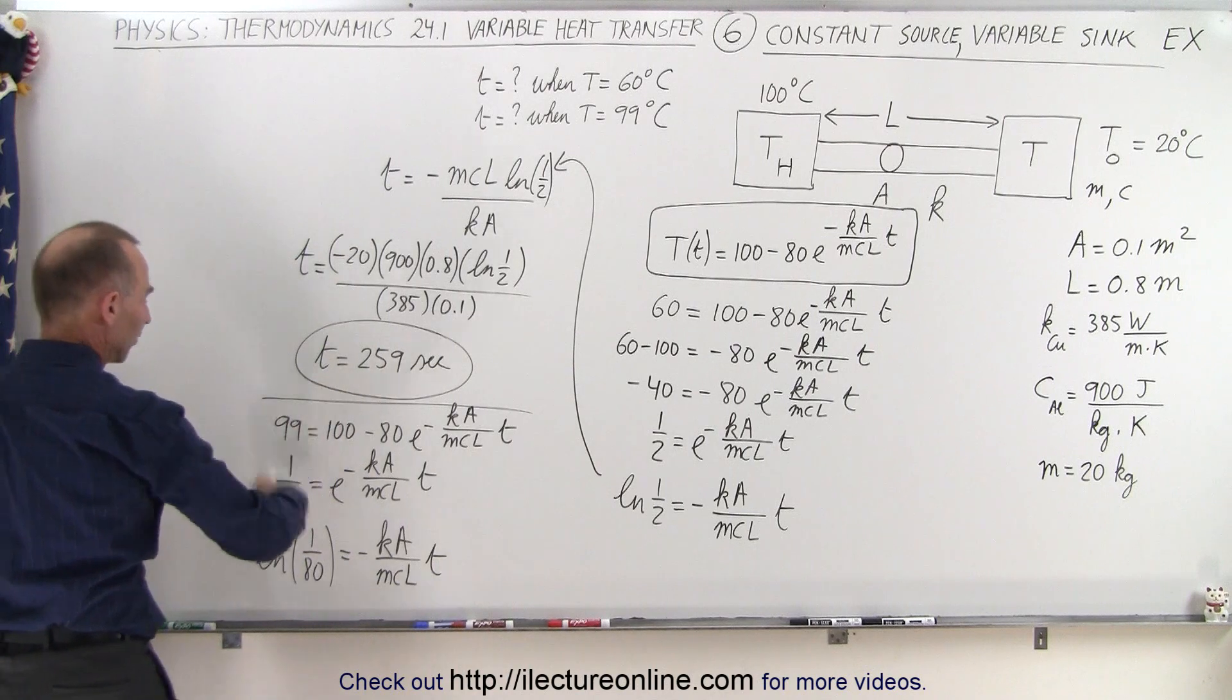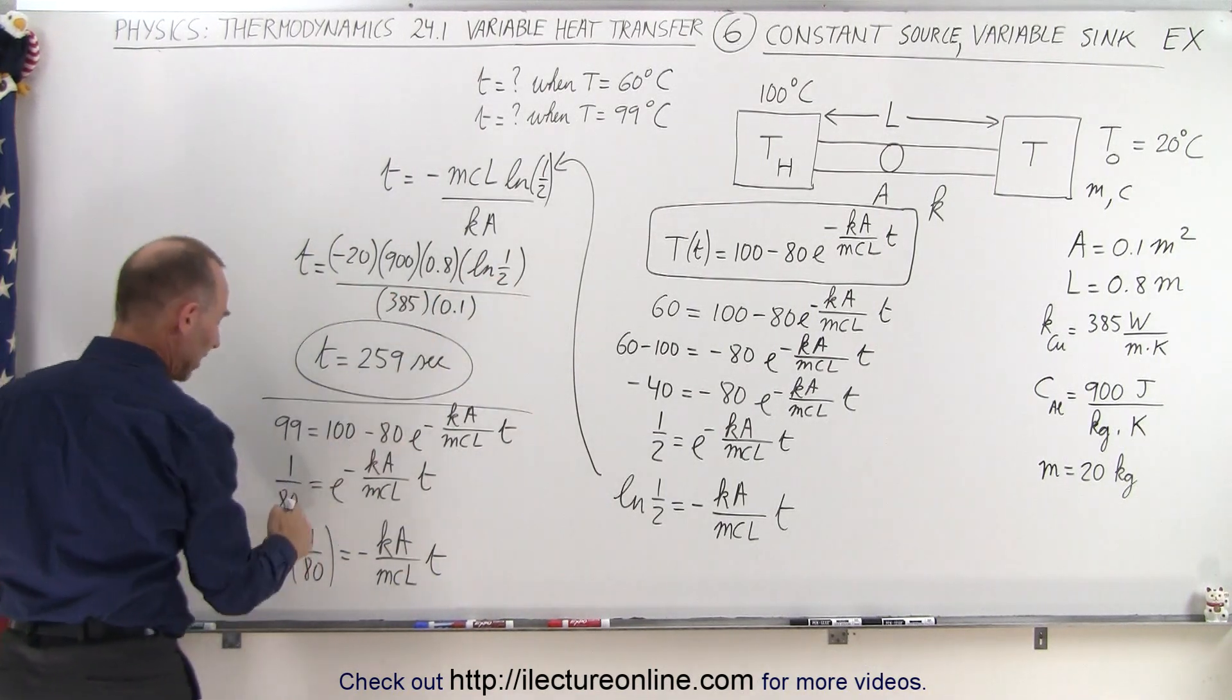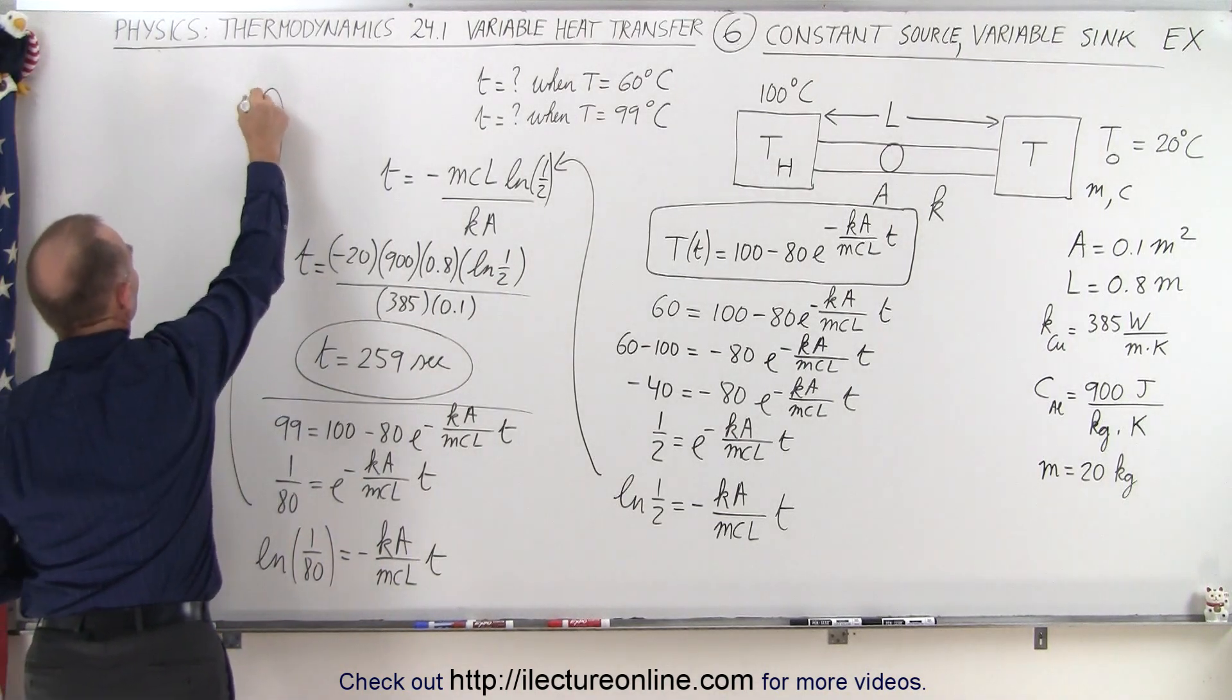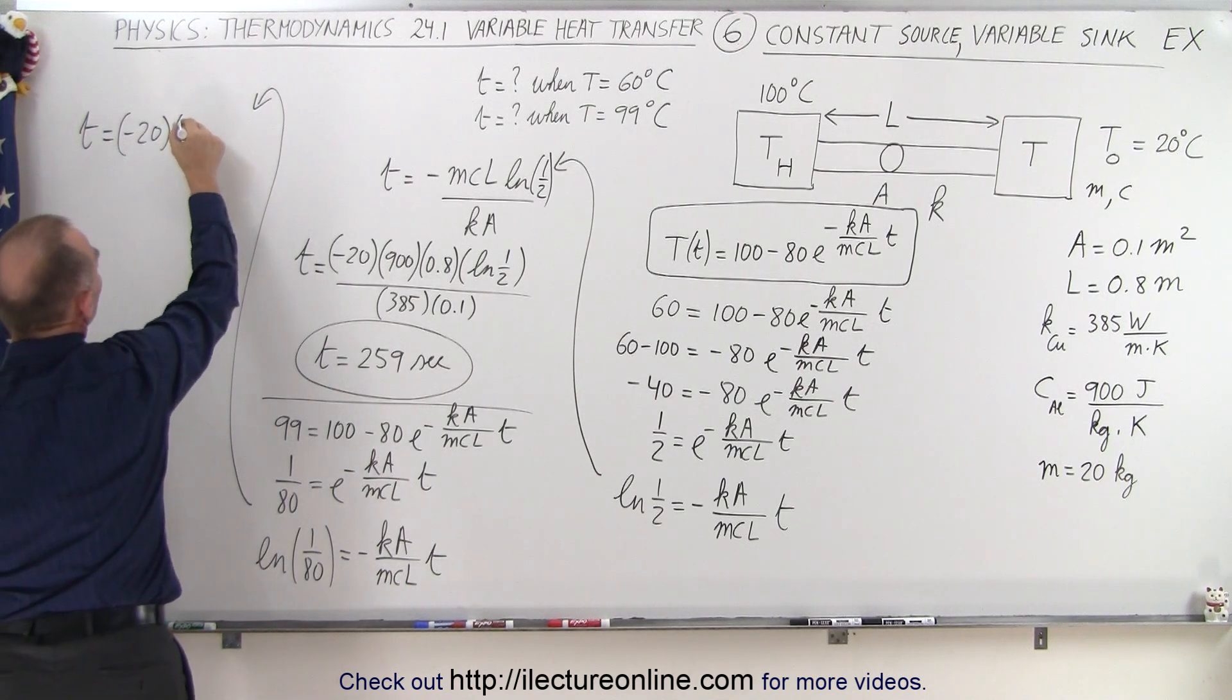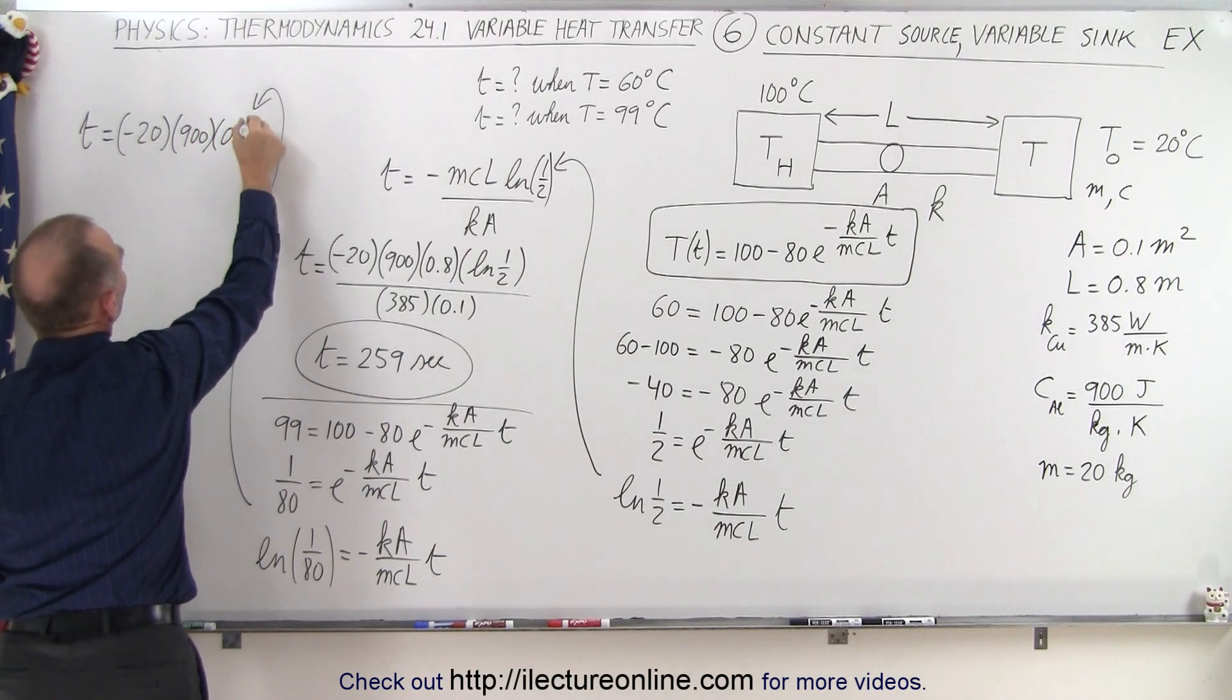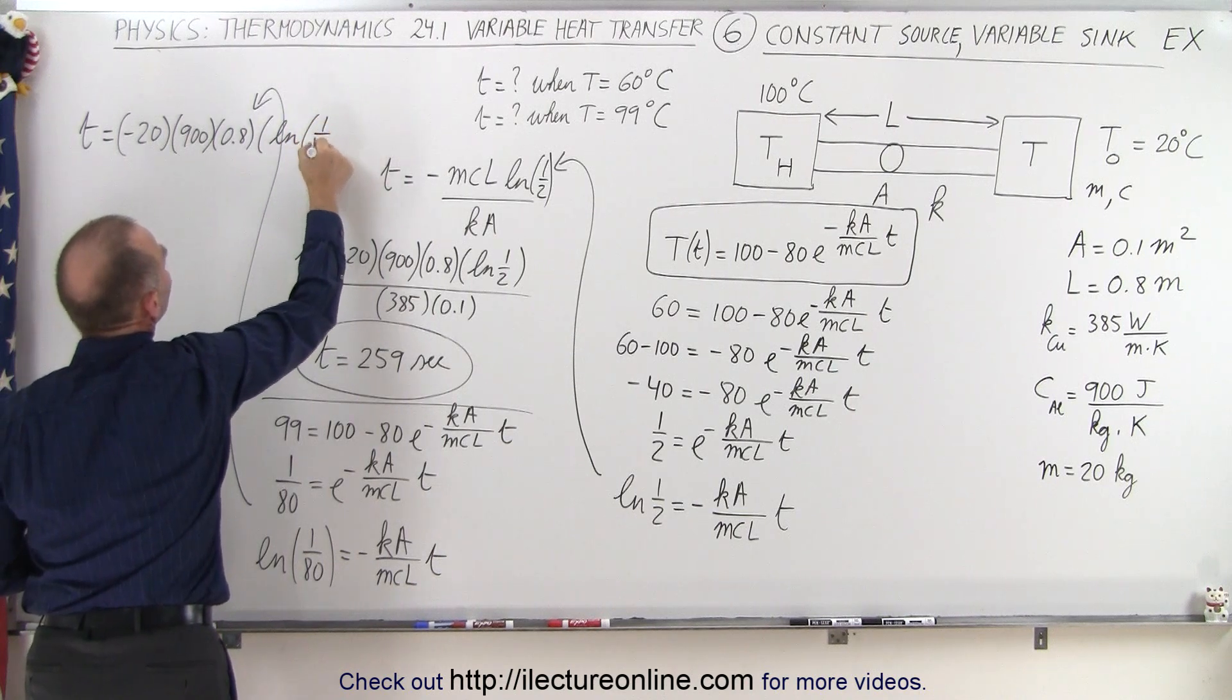And then finally, just like before, everything will be the same, except instead of having the natural log of one half, we'll have the natural log of 1 over 80. So that means for part B, we have time equals minus 20 times 900 times 0.8 times the natural log of 1 over 80, all divided by 385 and 0.1.